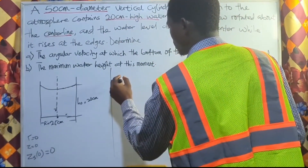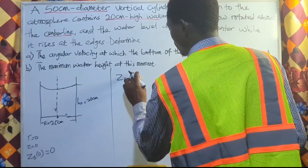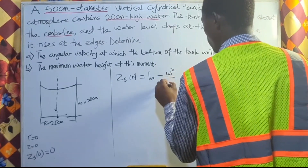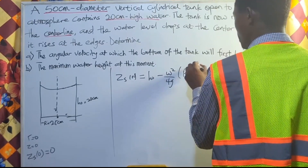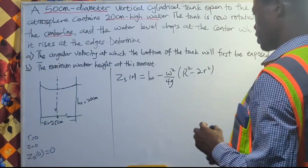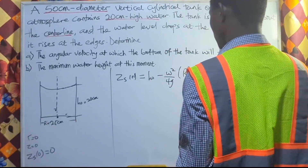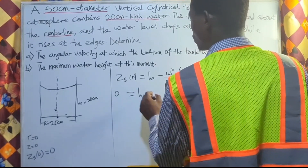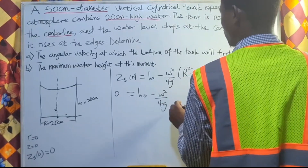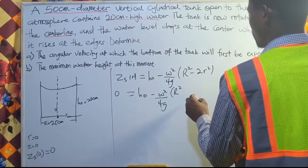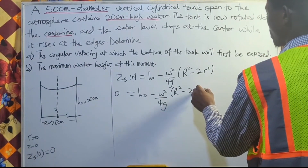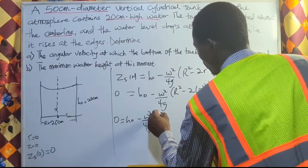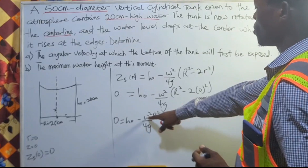Now let's get our formula for the free surface. The free surface equation is: zs(r) = h-naught minus (omega² / 4g) times (R² minus 2r²). Since zs equals zero at the center where r equals zero, this becomes: 0 = h-naught minus (omega² / 4g) times R², because the 2r² term vanishes.